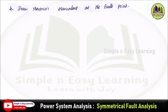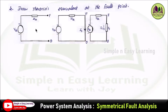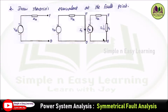Fourth step: draw the Thevenin equivalent circuit at the fault point. It consists of a Thevenin impedance Z_TH and a Thevenin voltage source, where F is the fault point. If a short circuit fault occurs here, the current I_F flows through this point, and there is also a fault impedance Z_F. This is the complete Thevenin equivalent circuit at the fault point.